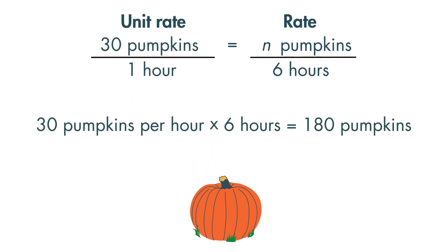At a rate of 30 pumpkins an hour, multiplied by 6 hours, the farmer could harvest 180 pumpkins.